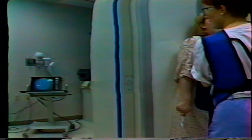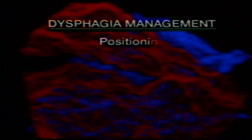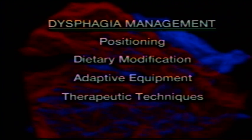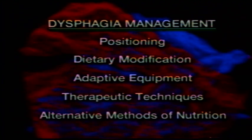There are several general techniques that can help improve the swallowing process and reduce the risk of aspiration in a patient with dysphagia. The multidisciplinary team will develop a safe swallowing plan addressing each individual's specific swallowing problem. There are five major treatment areas in dysphagia management: positioning, dietary modification, adaptive equipment, therapeutic techniques, and alternative methods of nutrition.